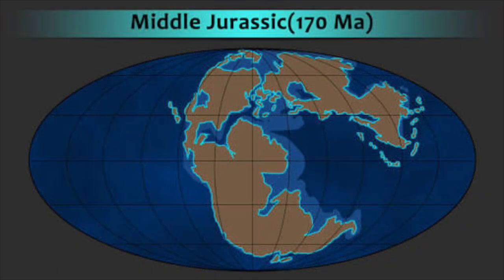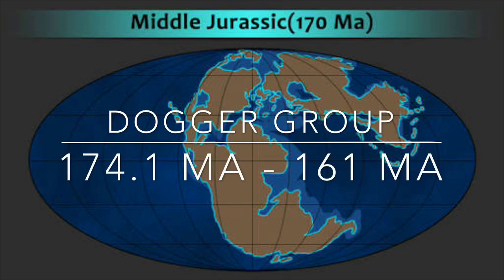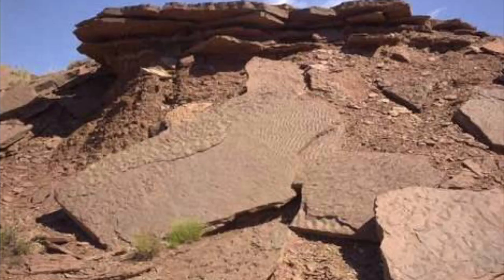Then is the Middle Jurassic, which is also called Dogger, ranging from 174.1 million years to 161 million years ago. They are mainly fossil-bearing rocks.